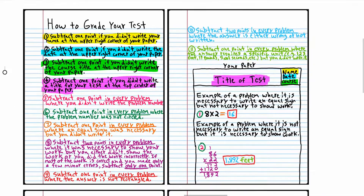If you scored a 90 to 100, that means you know the material really well. If you scored an 80 to 89, that means you know the material well but you have some minor issues to work on. If you scored anything lower than a 70, that means you're doing very poorly in this course. The reason that students do poorly is because they don't follow directions, don't take the test seriously, and don't study. You cannot take a math test and pass it without studying.